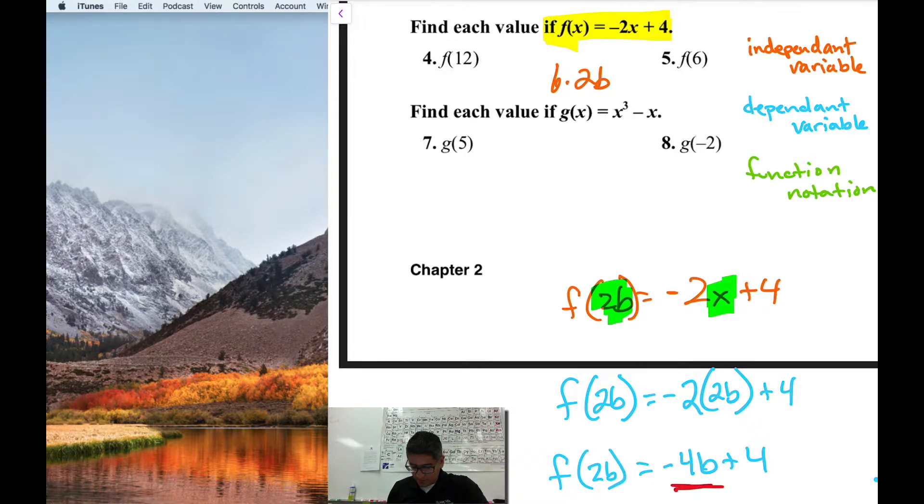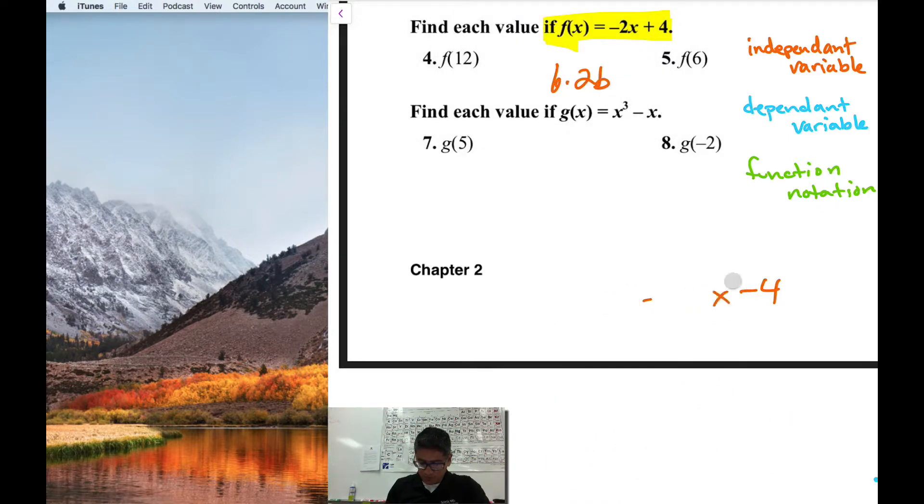And that's really all I can do because 4b and 4 are not like terms, so I can't put those together. That's as far as I can go with this equation. So f of 2b equals negative 4b plus 4. And that's it, I'm done with that one.